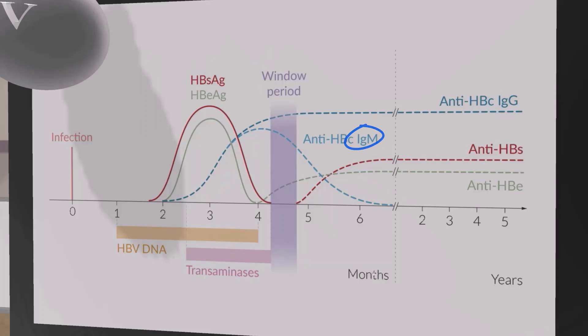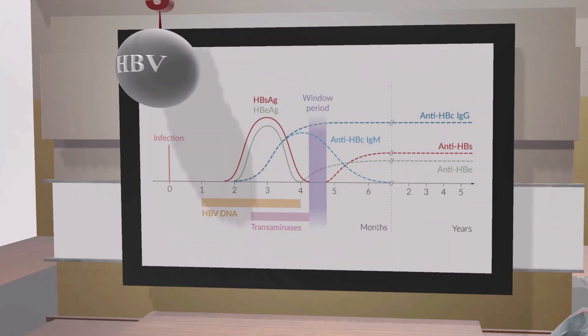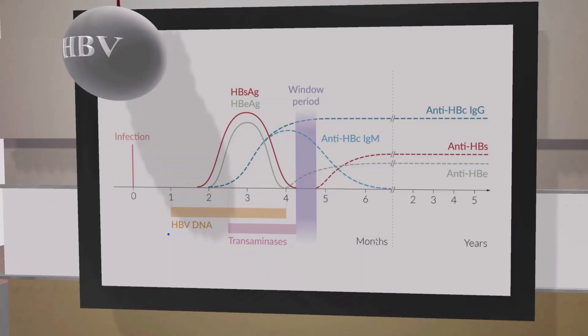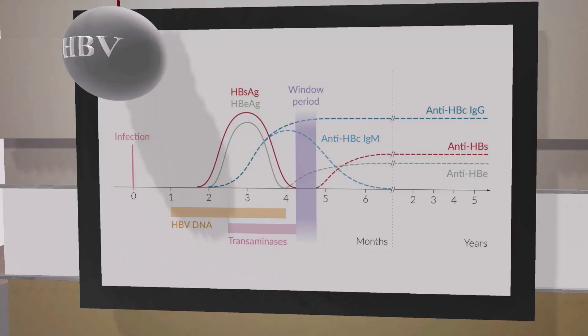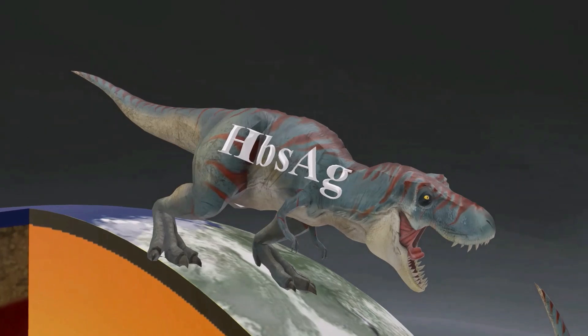You may have noticed HBV DNA on the graph. There is a definitive test for the viral load of HBV DNA, which gives a direct count of copies of the virus in the blood. Measuring a person's HBV DNA tells us about their viral load.